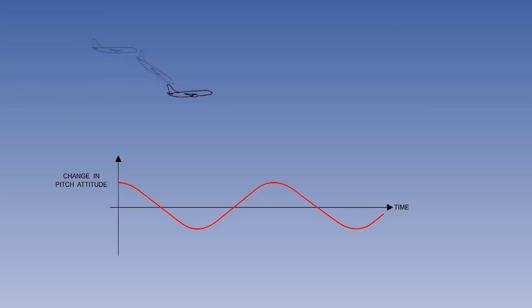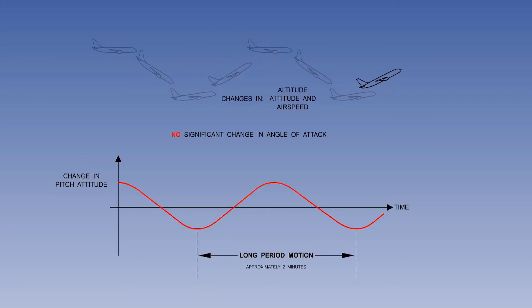The phugoid is a gradual interchange of potential and kinetic energy about some equilibrium airspeed and altitude. The period of oscillation is between one and two minutes, so it is easily controlled by the pilot. There are changes in altitude, attitude, and airspeed, but there is no significant change in angle of attack. Damping in the phugoid is weak.